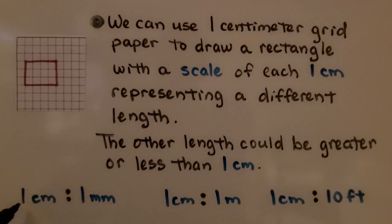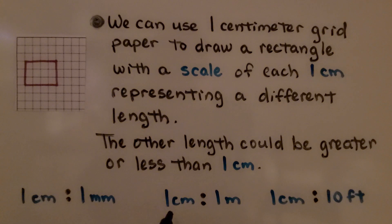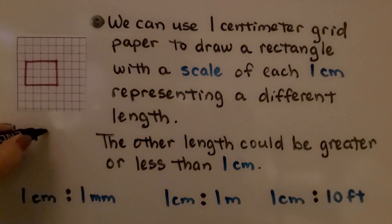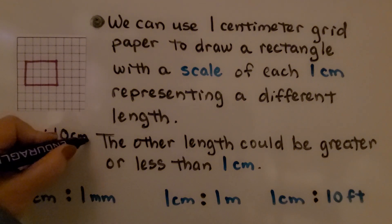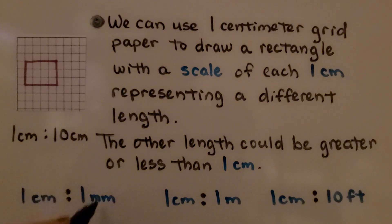It could be one centimeter to one millimeter — that means each one centimeter length is really just one millimeter. We could have one centimeter to one meter, or one centimeter to ten feet. We could even have one centimeter to ten centimeters. The scale could be the same units or it could be different units.